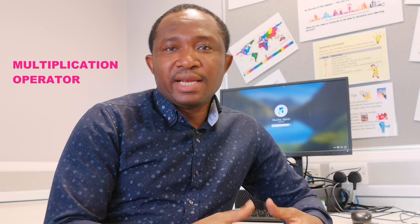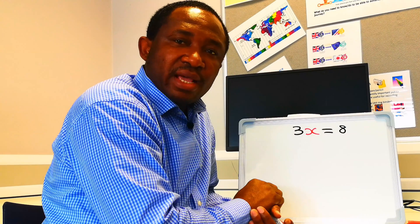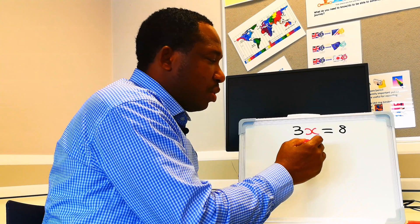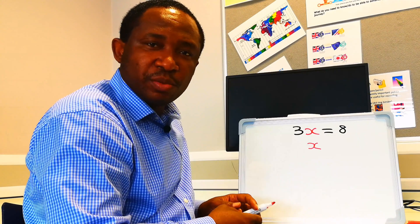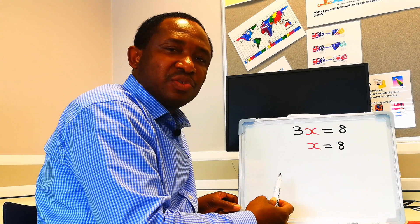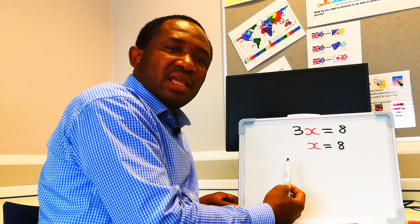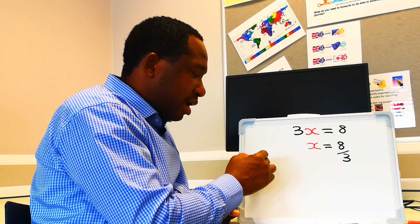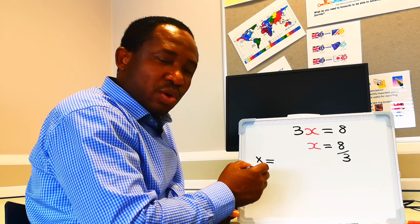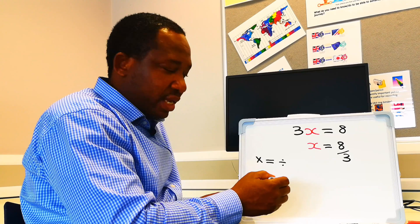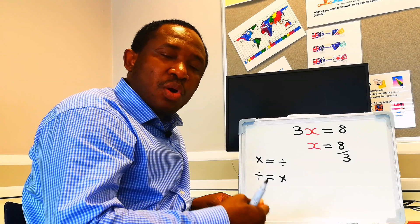Next, let's consider the multiplication operator in a linear equation. We have 3x is equal to 8. Our aim here is to isolate x — we are going to keep x here, making it the subject. On the other side we are going to have 8. The 3 has to leave x on this side; since 3 is multiplying x, on the other side it is going to divide. Whenever a variable is multiplying and moves across the equal sign, it is going to divide. And whenever a dividing variable moves across the equal sign, it will multiply. Always remember this.